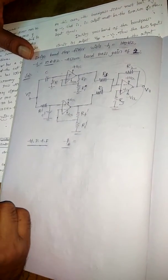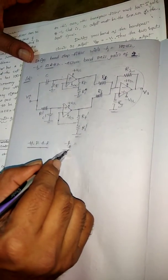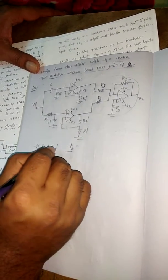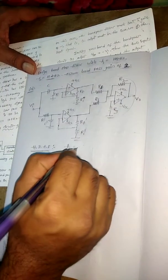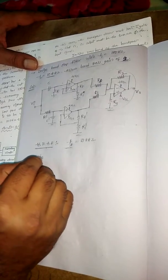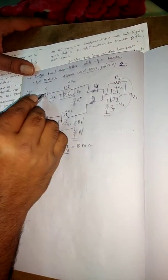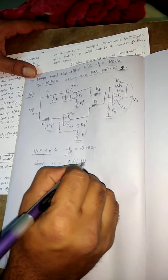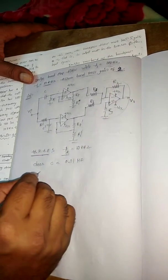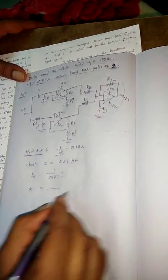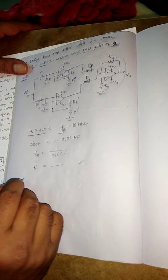For the high-pass filter we select the higher cutoff frequency fH, and for the low-pass filter we select the lower cutoff frequency. For band-stop this is quite opposite. The given value of fH is 10 kHz. Now choose the capacitor value C for the high-pass filter — select a small value in microfarads. Using the formula fH = 1 / (2πRC), we can find the resistance value and choose a standard value.